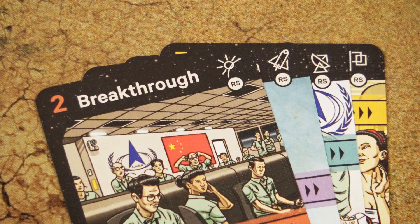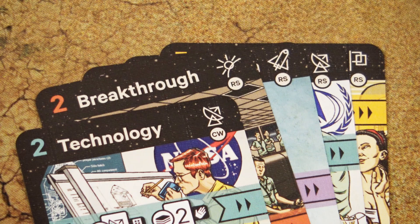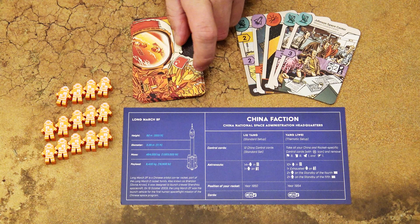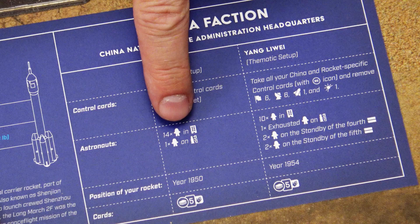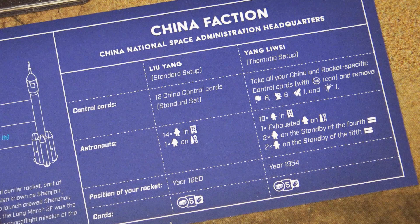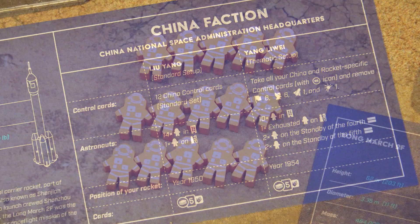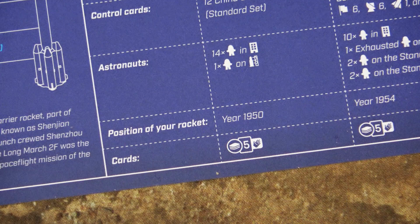If you play with a Soviet or NASA faction, also take out all the cards with CW letters, which stands for Cold War. You don't have to shuffle your deck of control cards — you can keep them face down on the table or in your hand. The symbology indicates that you take 14 of your astronauts and place them in your agency, basically your personal reserve, and then the last one goes to the launch pad.